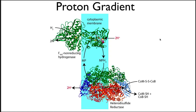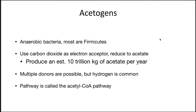That's the biochemistry of methanogens. The other group I want to talk about is the acetogens. Acetogens are anaerobic bacteria, and most are firmicutes — these are bacteria, not archaea. They use carbon dioxide as an electron acceptor and reduce it to acetate. They produce an estimated 10 trillion kilograms of acetate per year, so they make a lot of organic carbon.